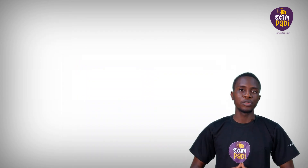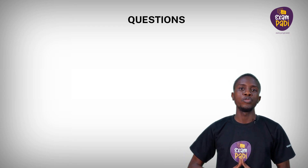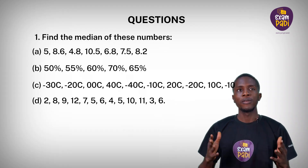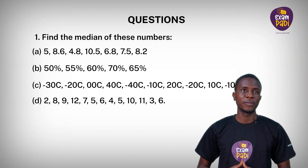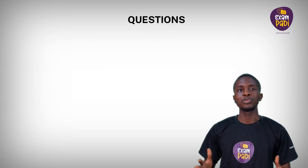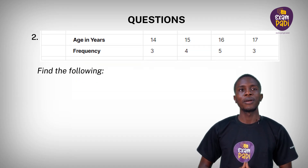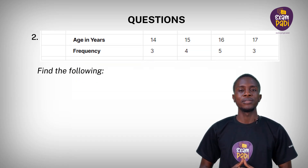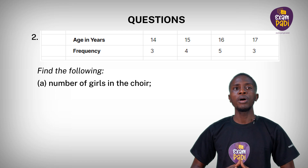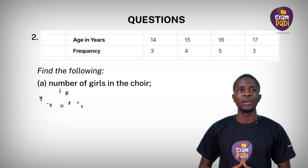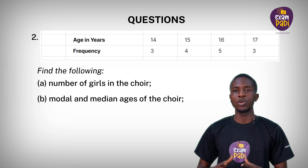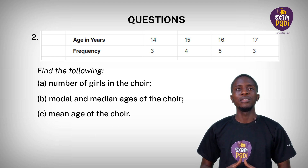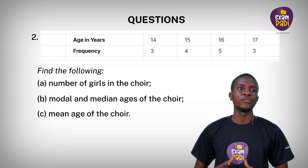You have come to the end of today's lesson. Here are a few questions to evaluate yourself. Question 1: Find the median of the following set of data. Question 2: From this table, find the following: A. Number of girls in the choir. B. Modal and median ages of the choir. And C. Mean age of the choir.